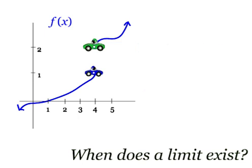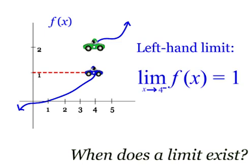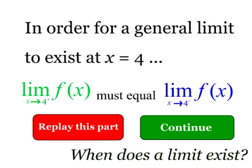Our height that we arrive at from the left is called the left-hand limit of f of x as x approaches 4, and it is denoted with a little negative symbol. Mathematically, in order for a limit to exist, both the right and the left-hand limits must be equal.